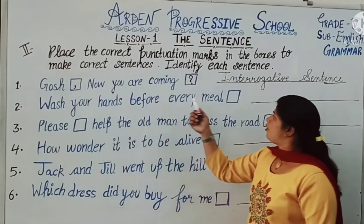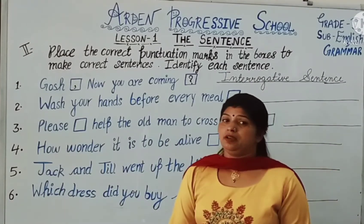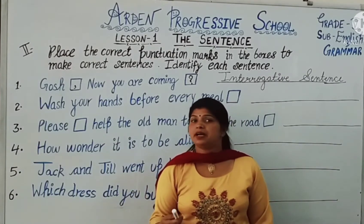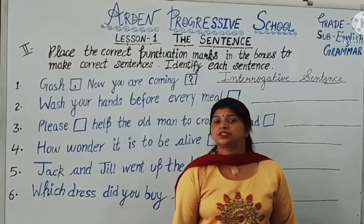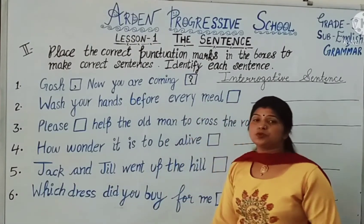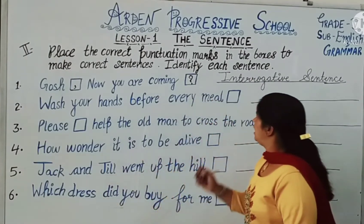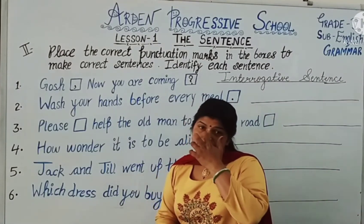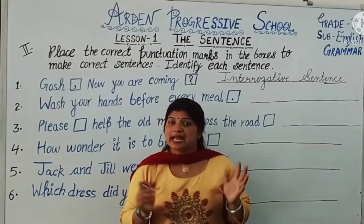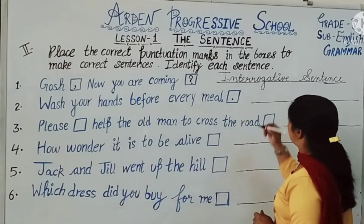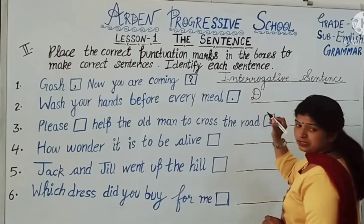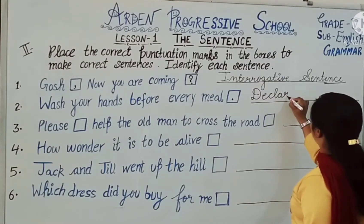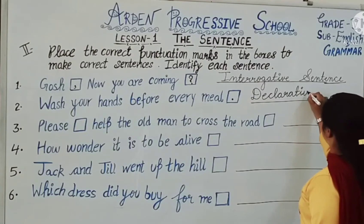Second one: Wash your hands before every meal. In this, we are stating that we must wash our hands before every meal. We are stating a fact, so a full stop will come. Whenever we state or declare something, that is an assertive or declarative sentence.